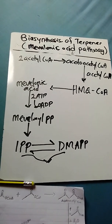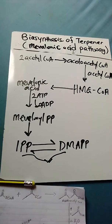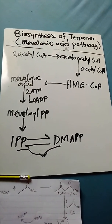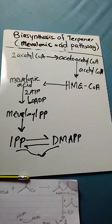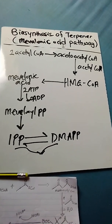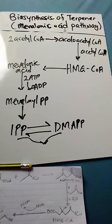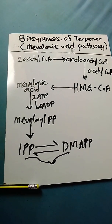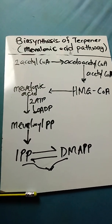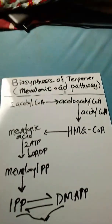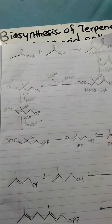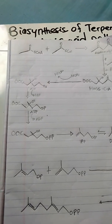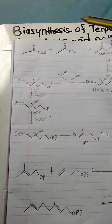This is a schematic diagram of the mevalonic acid pathway. Through a nucleophilic addition reaction, we produce the first molecule of that node, which we call the geranyl pyrophosphate. Let's look at the structures of this mevalonic acid pathway.